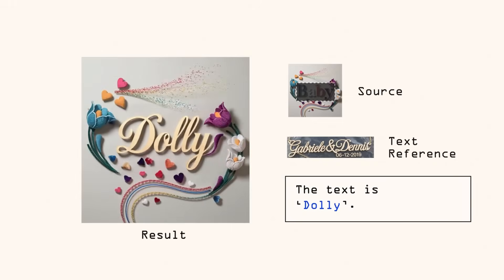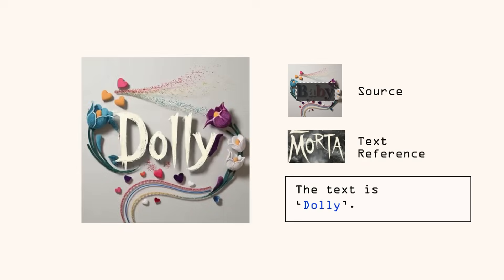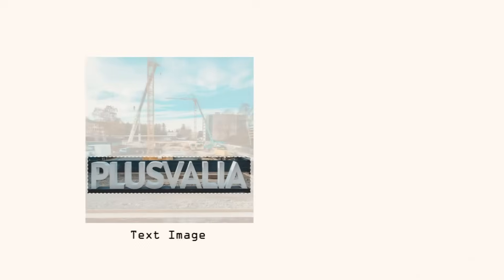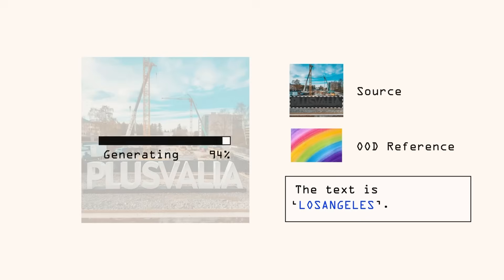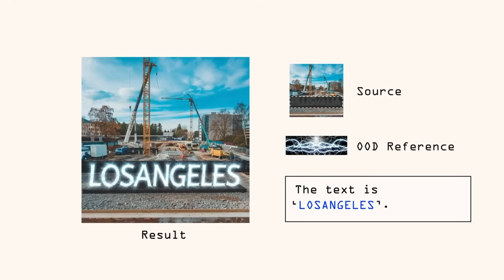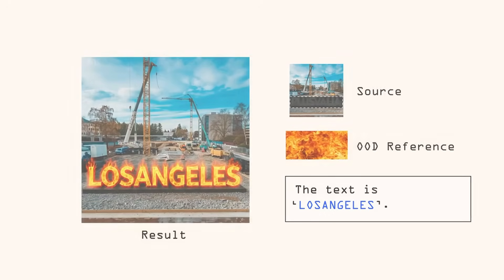It can even take on completely different styles. They give it the word 'dolly' again, but this time with a Morta horror-style reference — and it completely transforms the vibe. Here's another out-of-distribution reference: they give it a picture of a construction site and tell it to write 'Los Angeles' in the style of a rainbow — boom, instant colorful stylized text. But what if you change the reference to lightning? And now with fire as the reference, the text is literally made of flames.